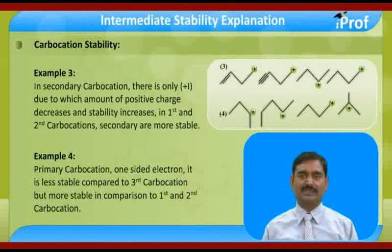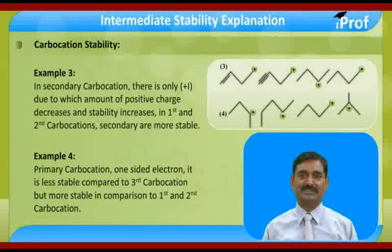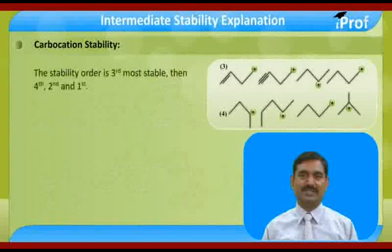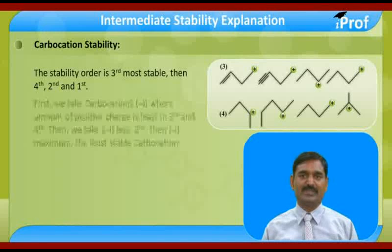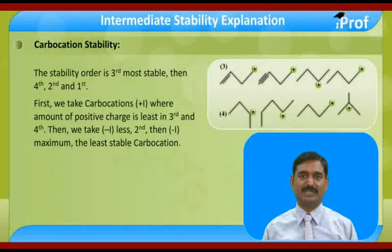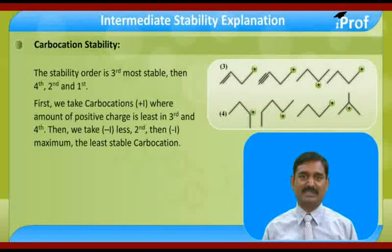In the fourth, this is a primary carbocation with one-sided electron flow. It is less stable than the third carbocation but more stable than the first and second. The stability order is: third is more stable than fourth, then second, then first. Where +I is present, the positive charge is least; with less -I comes second; with maximum -I is the least stable carbocation.